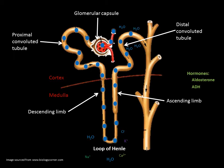ADH stimulates the insertion of aquaporin 2 into the principal cells of the distal convoluted tubule and the collecting ducts, which increases cell permeability and water moves more rapidly back into the blood. In the absence of ADH these cells are quite impermeable. Low ADH results in loss of water in the urine and dehydration.